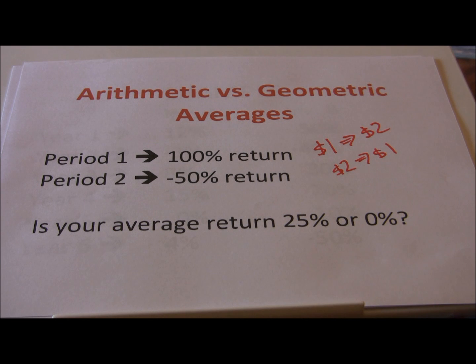If we calculate with arithmetic averages, which just average out the returns, we think we earned a twenty five percent return. But you can tell by looking at what we started with and what we ended with that our actual return is zero.